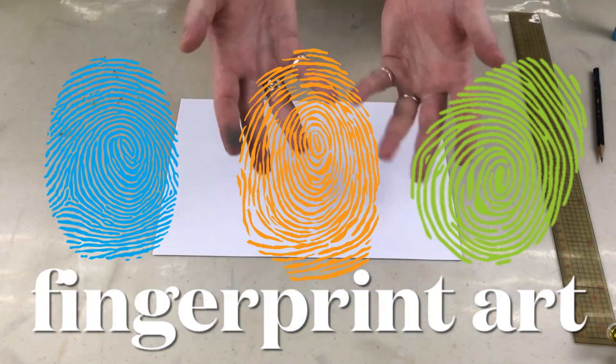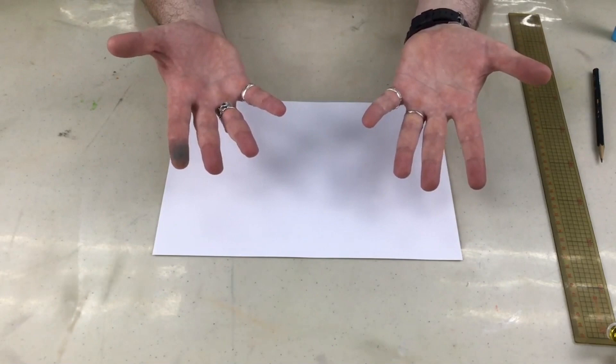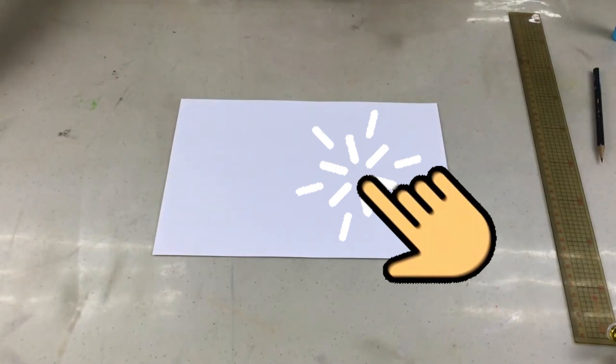Today we're going to make fingerprint art. Everyone has fingers. We're going to use the tip of our fingers, tip of our thumb, and we're going to make some art. Some of you have done this before and you've told me that you really liked it, so let's do it together and see what happens.